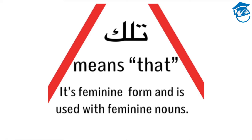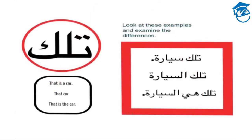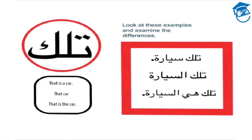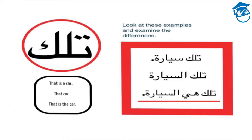Now let's look at tilka. Tilka means that, just like valika, but tilka is the feminine form and it's used with feminine nouns. In the first example, tilka sayaratun means that is a car. In the second example, tilka al-sayaratu means that car. And in the third example, tilka hiya sayaratu means that is the car.